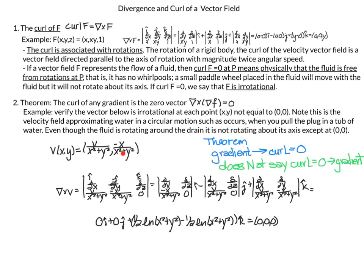We have the theorem that says the curl of any gradient is the zero vector. This function v for the tub-drain example, when we compute its curl and get 0, it might be the gradient of another function — but this theorem doesn't say that. The theorem says if it's a gradient then the curl is equal to 0, but it does not say that if the curl is 0 then it is a gradient. So that is undetermined.